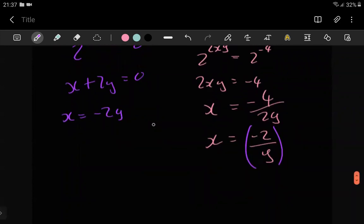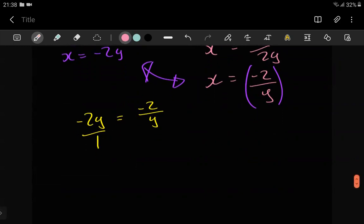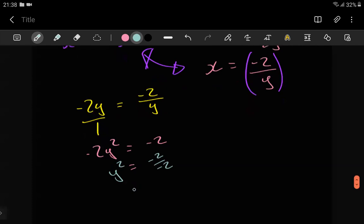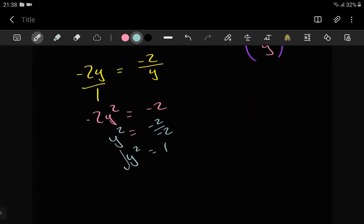And then now we can just equate them together, which is going to give us negative 2y equals negative 2 over y. And then solving for y here, you can just cross multiply. Cross multiplying, you're going to end up with negative 2 and then negative 2y squared. Divide by negative 2 on both sides, you have y squared equals negative 2 over negative 2. y squared equals 1, and then square root both sides here, y equals plus or minus 1.